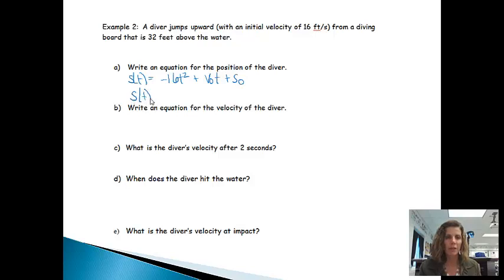And then from here, you can just plug in. We'll have negative 16t squared plus the initial velocity since it was 16 feet per second and the diver was jumping upward. That will be a positive velocity. So it will be plus 16t plus s sub zero is the initial height. He started 32, he or she started 32 feet above the water. So that would be my position formula.